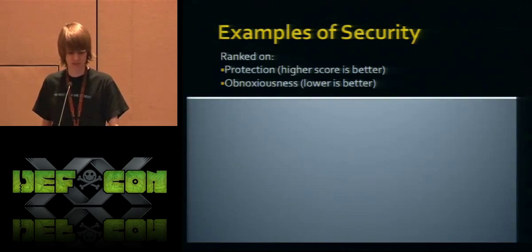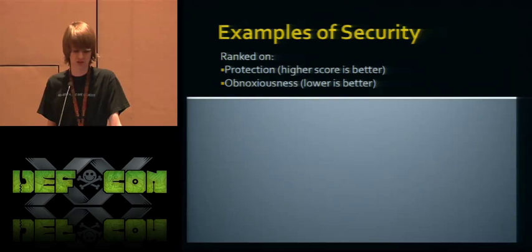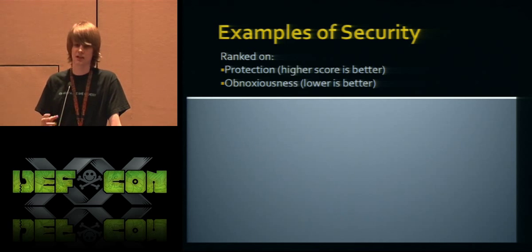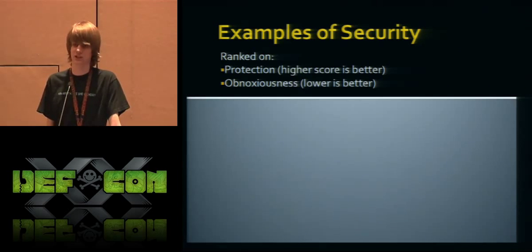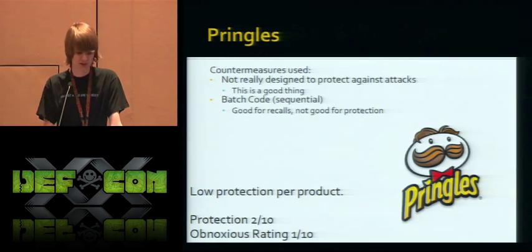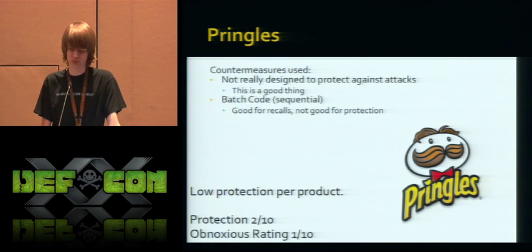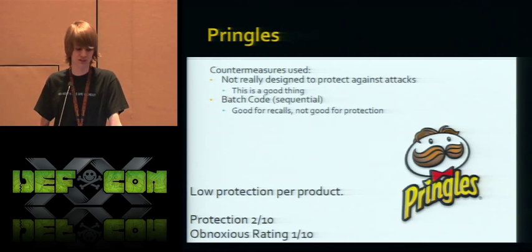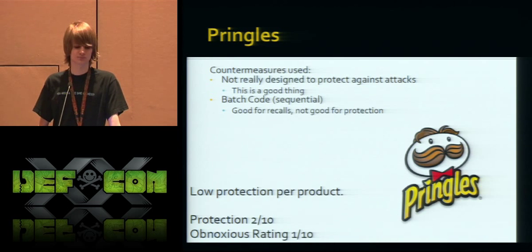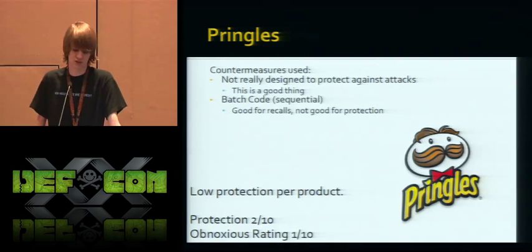Now for the reports — I've ranked a couple of companies on security: protection, how secure their countermeasures are, and how obnoxious it is for a legitimate user returning a device. Starting with Pringles: it wasn't really designed to protect against targeted attacks because no one wants to go out and steal Pringles. They use a batch code which is sequential, which makes sense for food recalls or manufacturing issues. This is low protection, not very obnoxious, and easily bypassed.